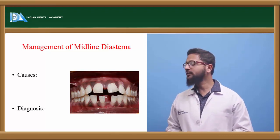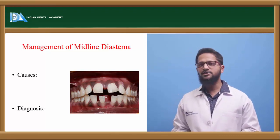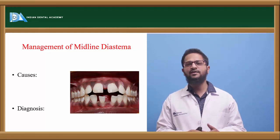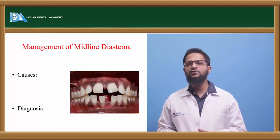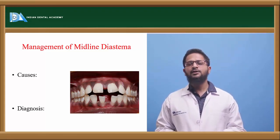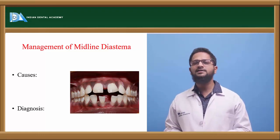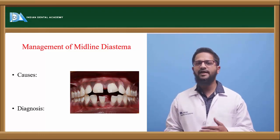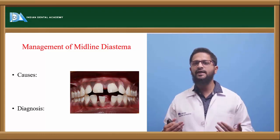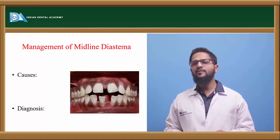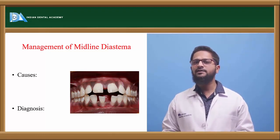Another cause is during the ugly duckling stage. During the mixed dentition period there occurs a stage between 9 to 11 years of age called as ugly duckling stage. During this stage, midline diastema or midline spacing is seen, but it is also self-correcting as the age advances and canines fully erupt into the oral cavity. This space automatically gets closed.